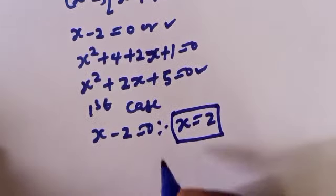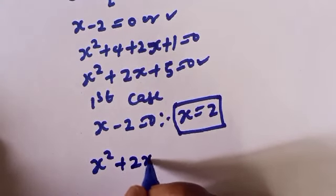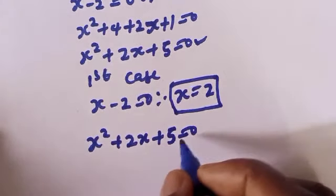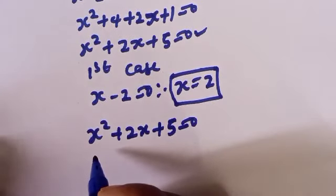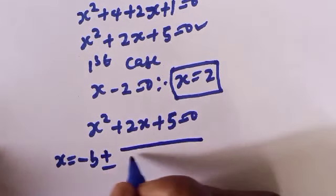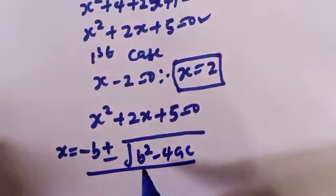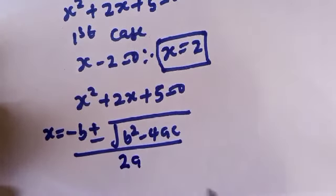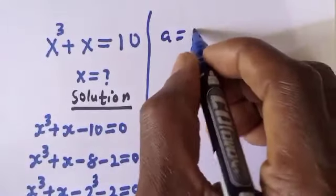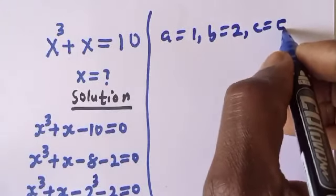From the second case, we have s squared plus 2s plus 5 is equal to 0. Let's solve this using the quadratic general formula: s is equal to minus b plus or minus square root of b squared minus 4ac over 2a. Where a is equal to 1, b is equal to 2, and c is equal to 5.